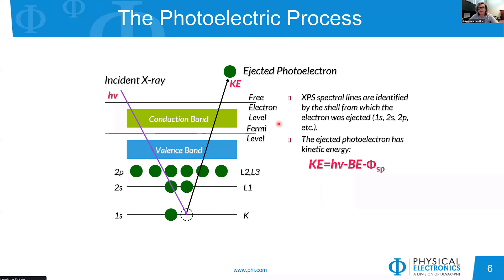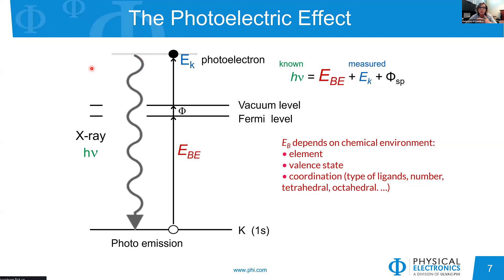Something that we all understand is what we are doing in XPS: we use incident X-rays of fixed energy and eject photoelectrons. If the energy of our X-ray is higher than the binding energy of the electrons, the photoelectrons will be emitted with a specific kinetic energy. Kinetic energy is what we measure in order to find the binding energy of the electron. The photoelectric effect is the balance of energy — the total energy put into the system by our X-ray equals the sum of the binding energy, kinetic energy, and the work function of the instrument. What we are after in XPS is the binding energy.